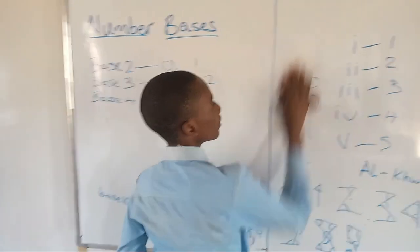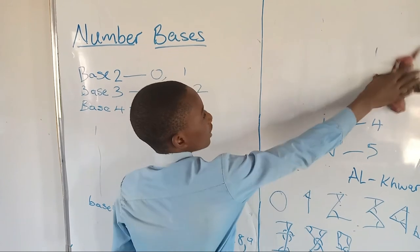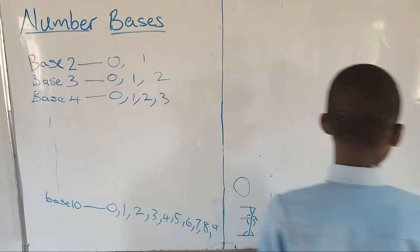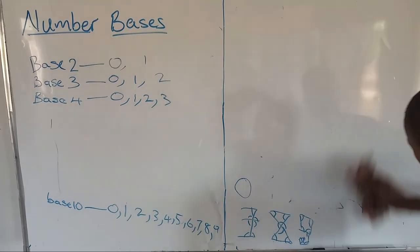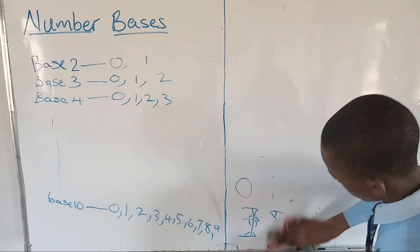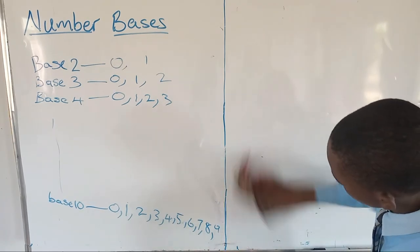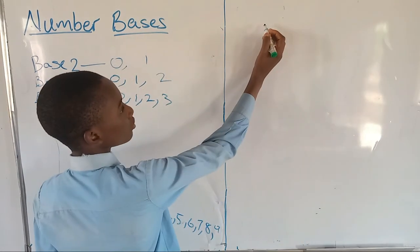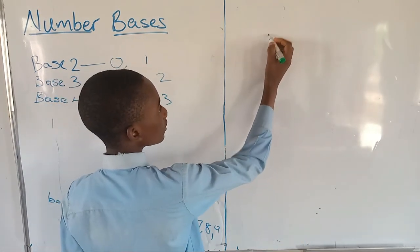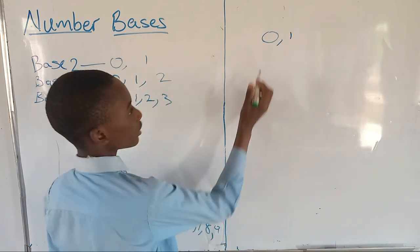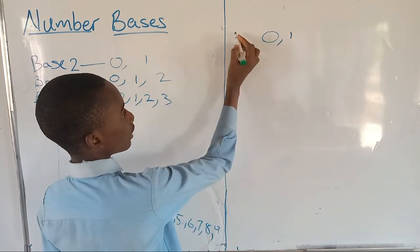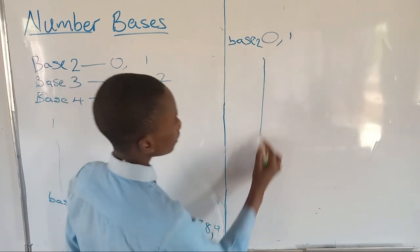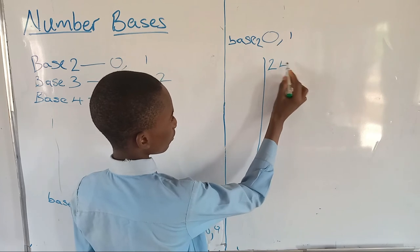So base two will always occur like zero and one. So these are the numbers that are supposed to occur. So let's change twenty-four to base two.